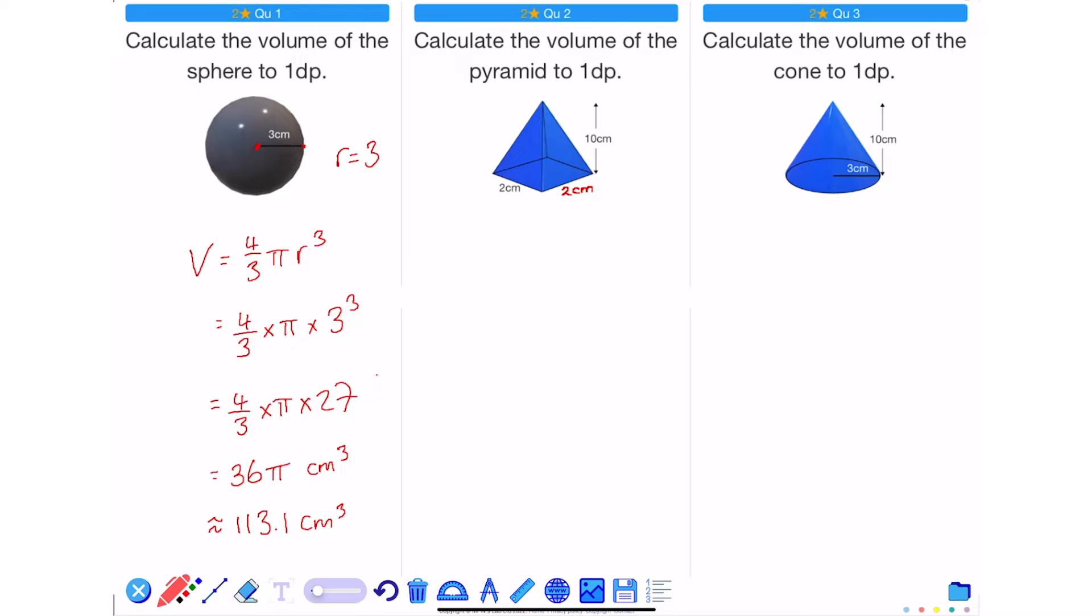For the next two questions, they are pyramids. But with the first one, it's a square base pyramid. And with the second one, it's a circular base pyramid, otherwise known as a cone.